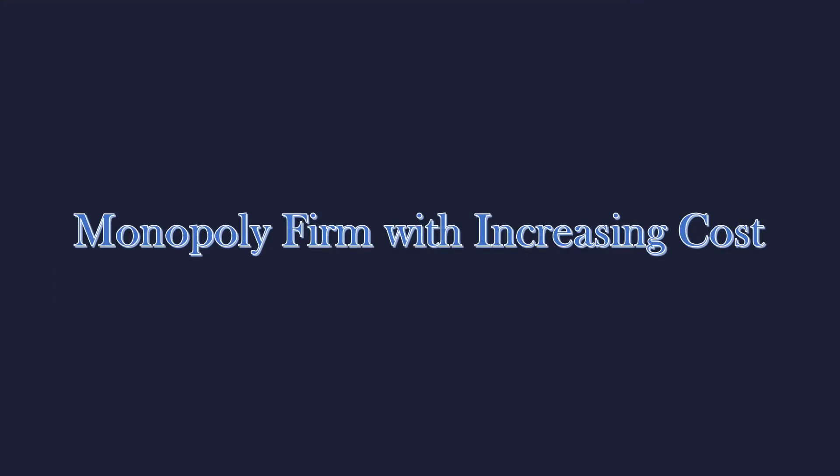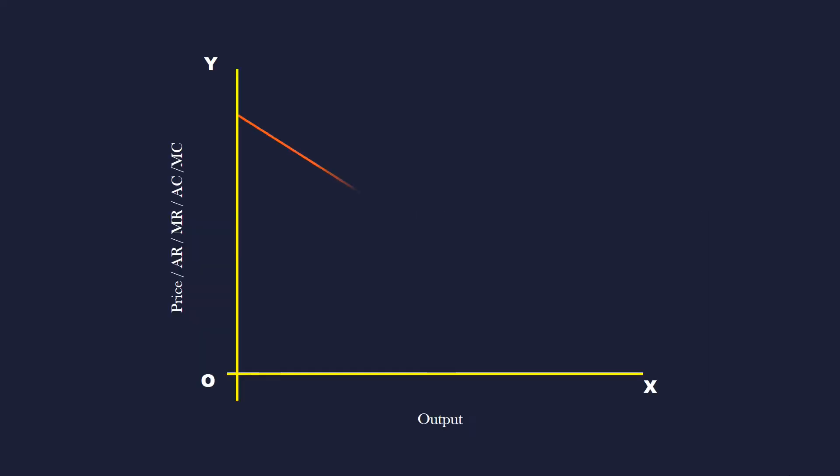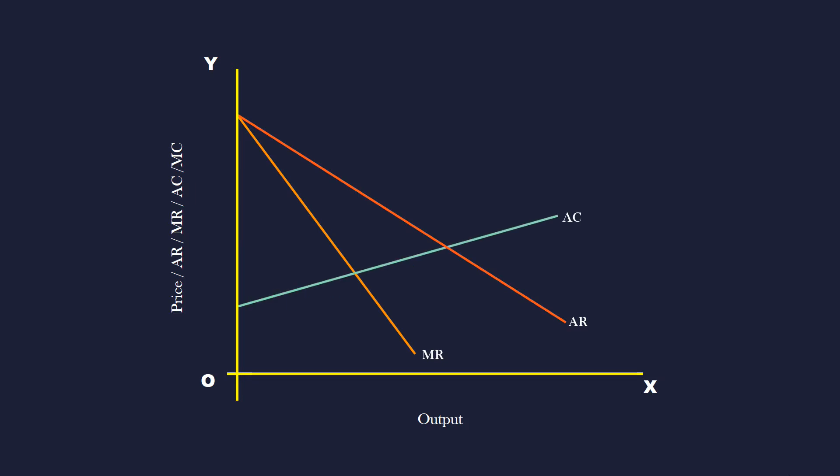Monopoly Firm with Increasing Cost. The revenue curves are given by AR and MR. Since the firm is facing increasing cost condition, its average cost curve AC slopes upward from left to right. Its corresponding marginal cost curve MC lies above the average cost curve AC.